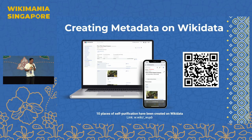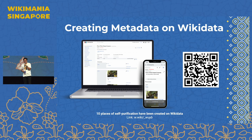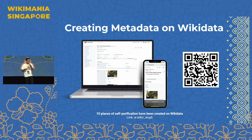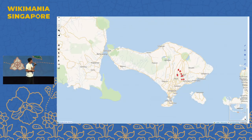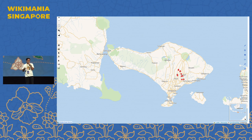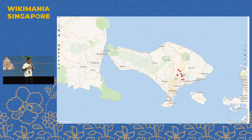Selanjutnya, kami juga mengeksplorasi proyek Wikimedia lain, yaitu Wikidata. Kami memetakkan lokasi dan memberikan metadata yang jelas di sini, baik itu dari nama tempat, titik lokasi, foto, dan hal-hal lain yang penting diketahui oleh masyarakat secara luas. Berikut adalah titik lokasi yang kami petakan di Wikidata yang dapat diakses oleh semua orang. Ke depannya, kami juga ingin merambah ke OpenStreetMap untuk membantu memetakan lokasi-lokasi tersebut.